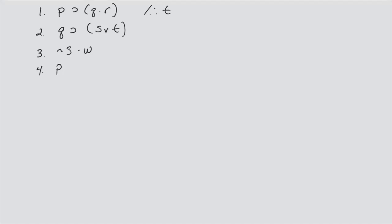Here's a very basic proof. What we do in a demonstration is simply list how we derive a new line from the previous lines that are given. I've got four premises and the conclusion I'm looking for is T. From line one and line four, because I know a rule called modus ponens, I can derive Q and R — from lines one and four, MP for modus ponens. I've derived that new line from what's given.